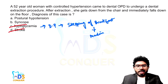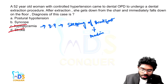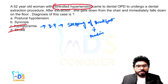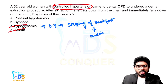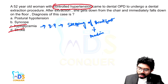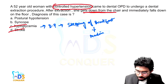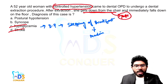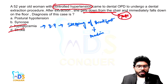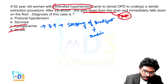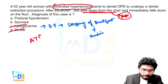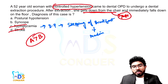Going deeper into this question, it is clearly mentioned that the patient has controlled hypertension because of medication use. They are clearly mentioning that the patient got down from the chair — they are clearly mentioning the position of the patient. From my point of view, it is better to go with option A, postural hypotension, compared to option B, syncope. Even B can be considered, but A is a better option when compared to B.